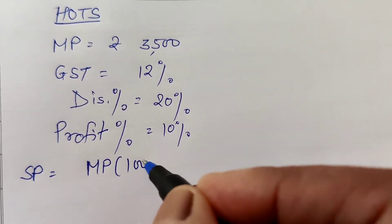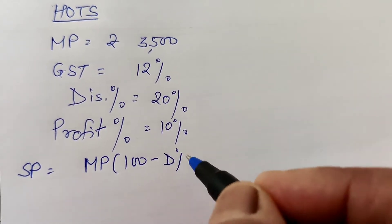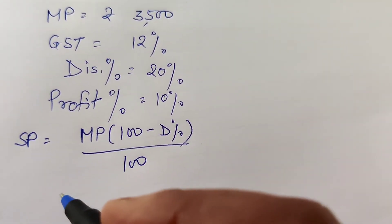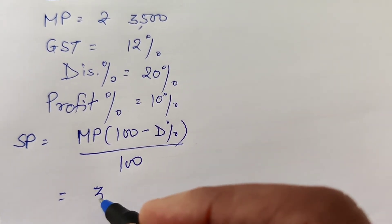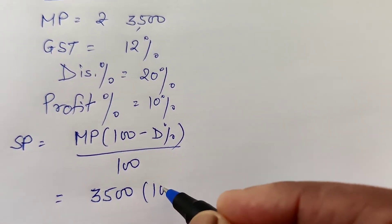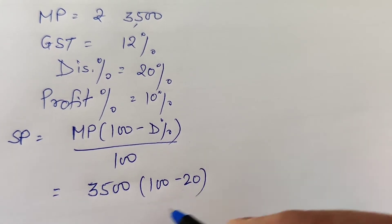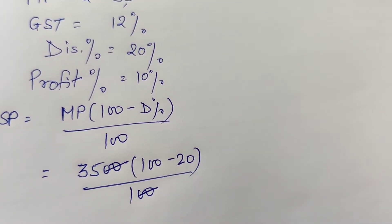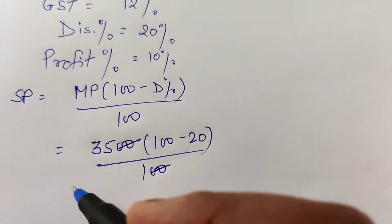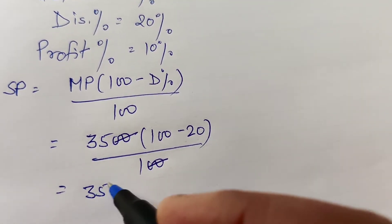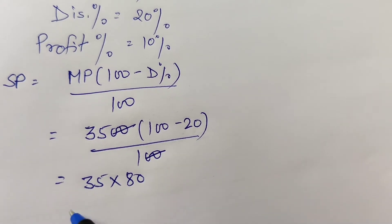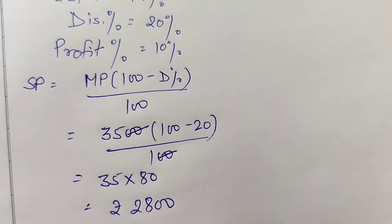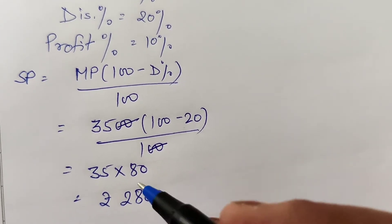The formula for selling price is: SP = MP × (100 minus discount percent) divided by 100. So selling price equals 3500 × (100 minus 20) divided by 100, which is 3500 × 80 divided by 100. Cancelling the zero, we get 35 × 80 equals 2800. So the selling price before GST is rupees 2800.